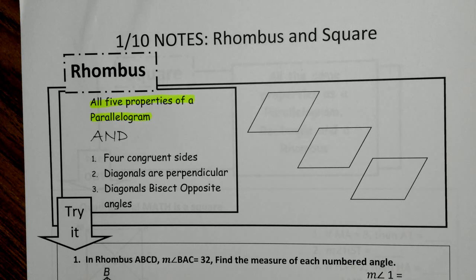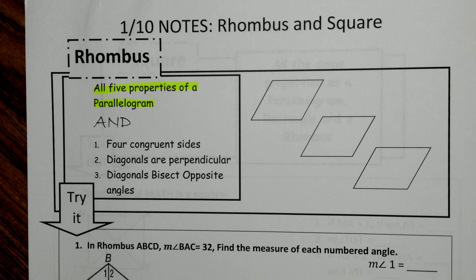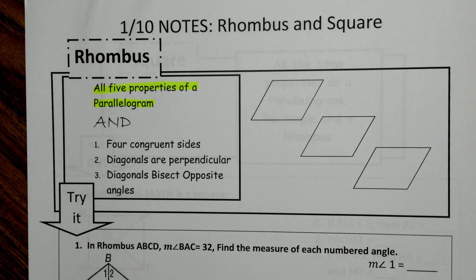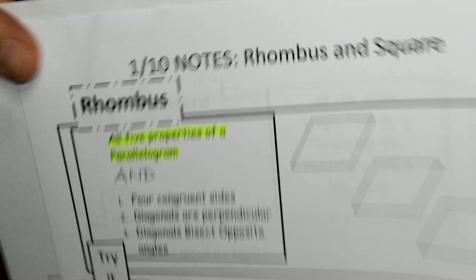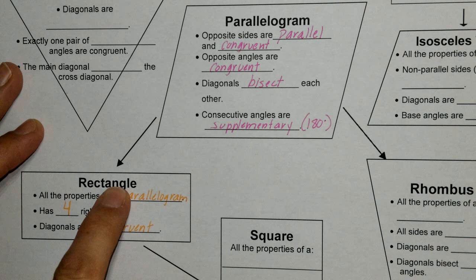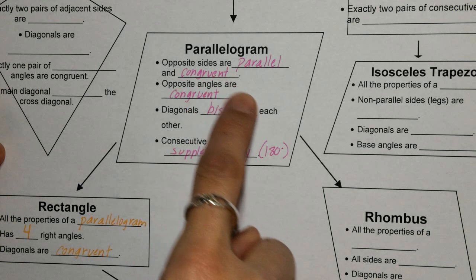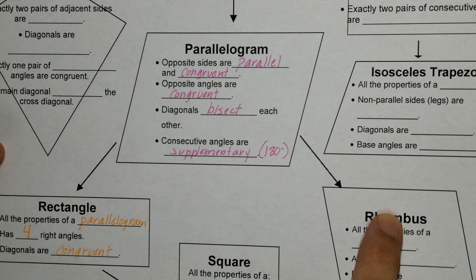Now, when we look at the flow chart, you're going to see that the rhombus does not have the two extra properties of the rectangle — there are no 90-degree angles, and the diagonals are not congruent. Instead, we go a different direction. So the rhombus is not underneath the rectangle; it does not share those two properties. We take the parallelogram and branch off in a different direction.